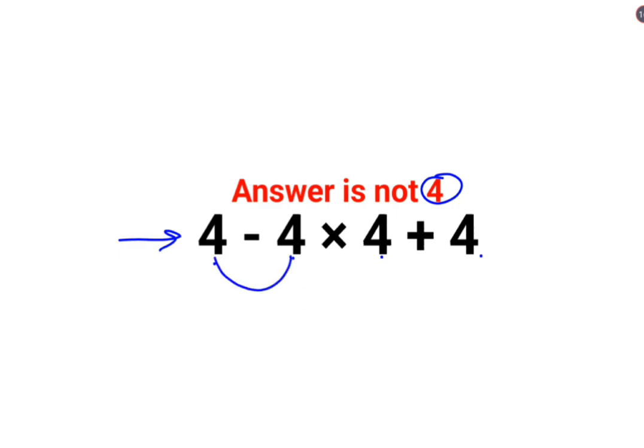that 4 minus 4 is 0, multiplied by 4 plus 4. So 0 multiplied by any number is 0, and 0 plus 4 gets you 4. But that's not how these things work. Please understand, when you have sums like these, we have to specifically follow the order of operations.